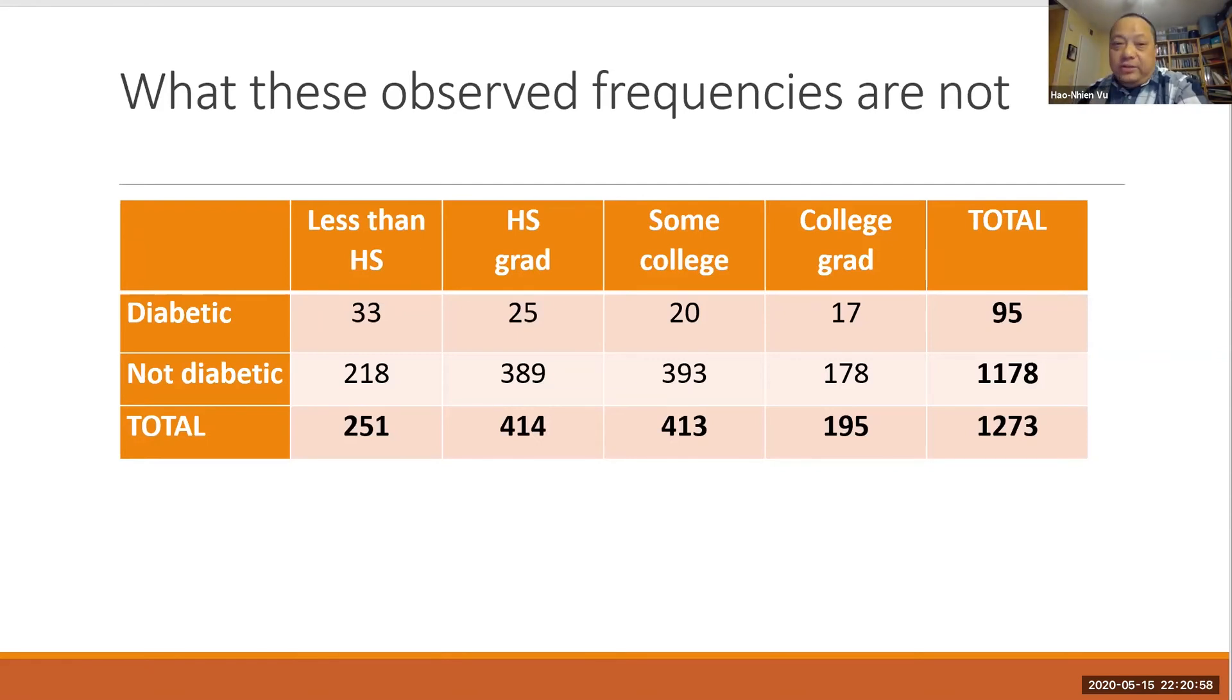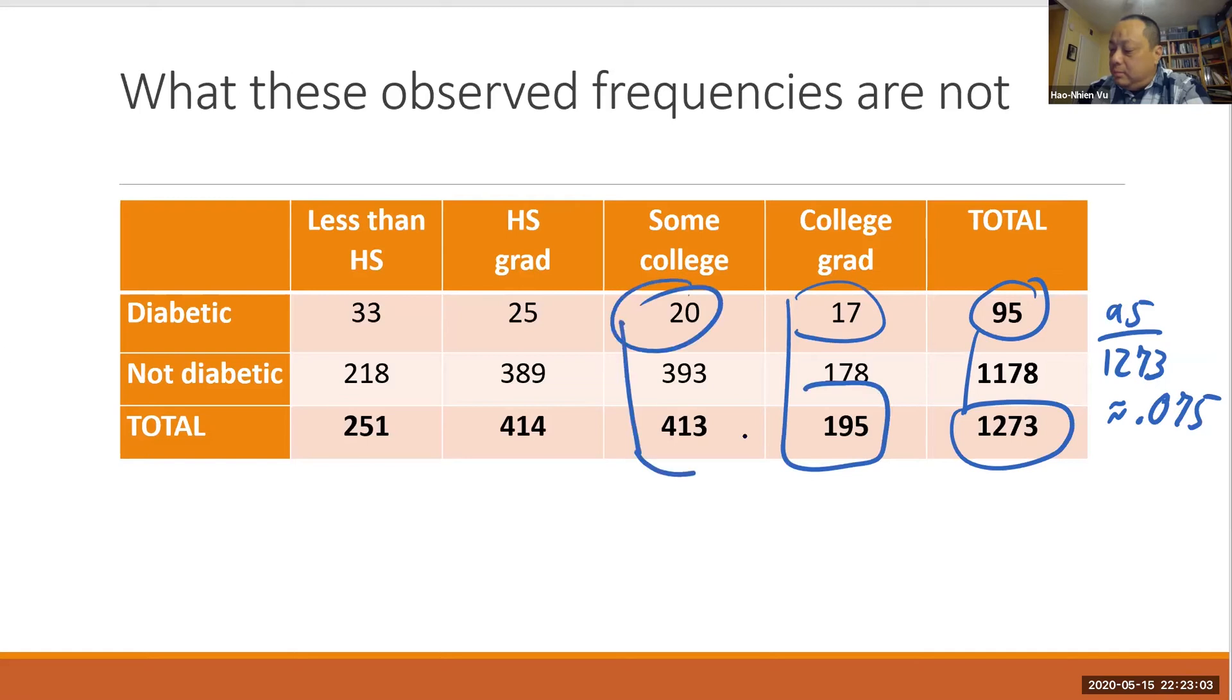And here's the insight. The null hypothesis is that the two variables are independent. If the two variables were independent, then that means the educational level don't affect whether or not someone is diabetic. Well, overall, there are 95 diabetic people out of 1,273. So we're looking at 95 out of 1273, which is about 0.075, the proportion of people who are diabetic. Well, if educational level were independent of being diabetic, then all of these other proportions should also be 0.075.